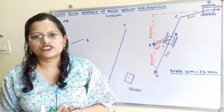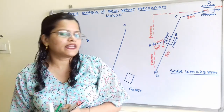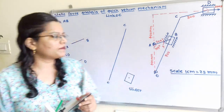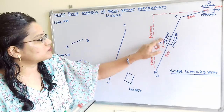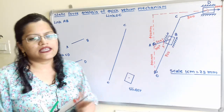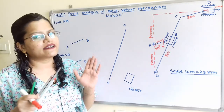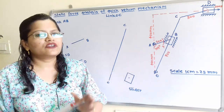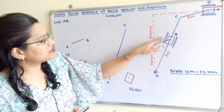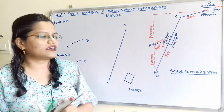Now, what is the question? For the equilibrium of this quick return motion mechanism, how much torque is to be applied on link AB? We have to determine both the magnitude and direction of the torque T to be applied.